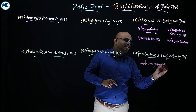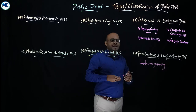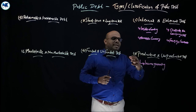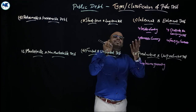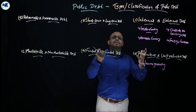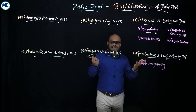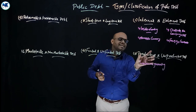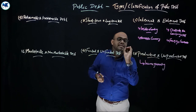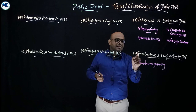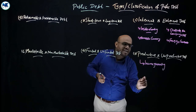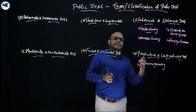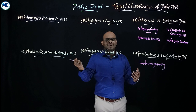In the case of productive debt, the government can easily repay the principal amount along with the rate of interest. The fund is utilized for productive areas like industry, agriculture, etc.